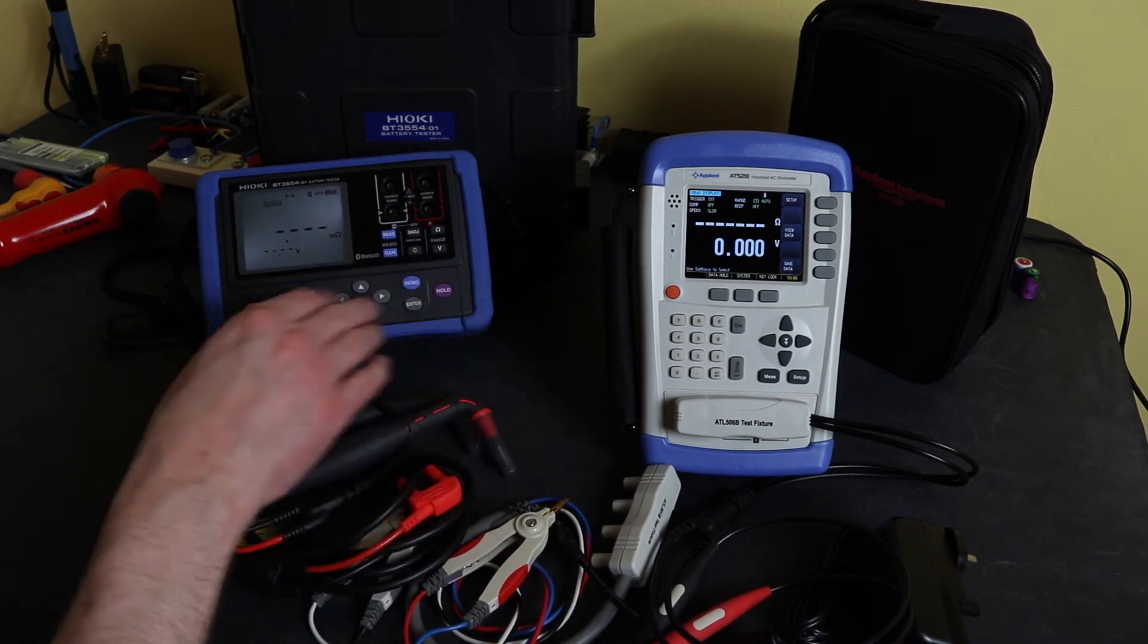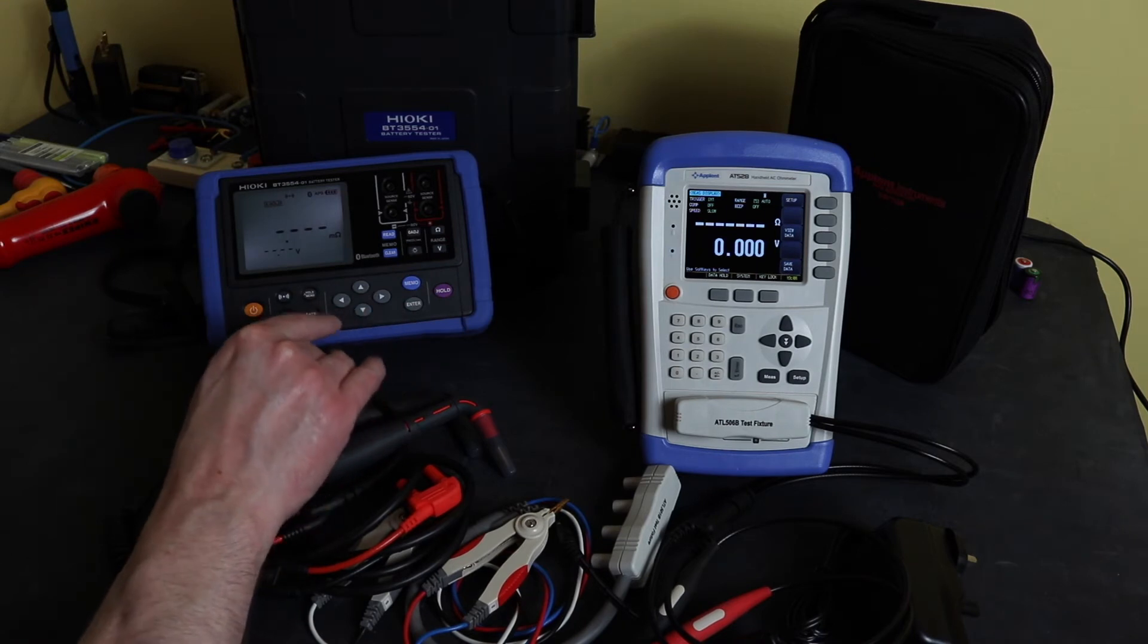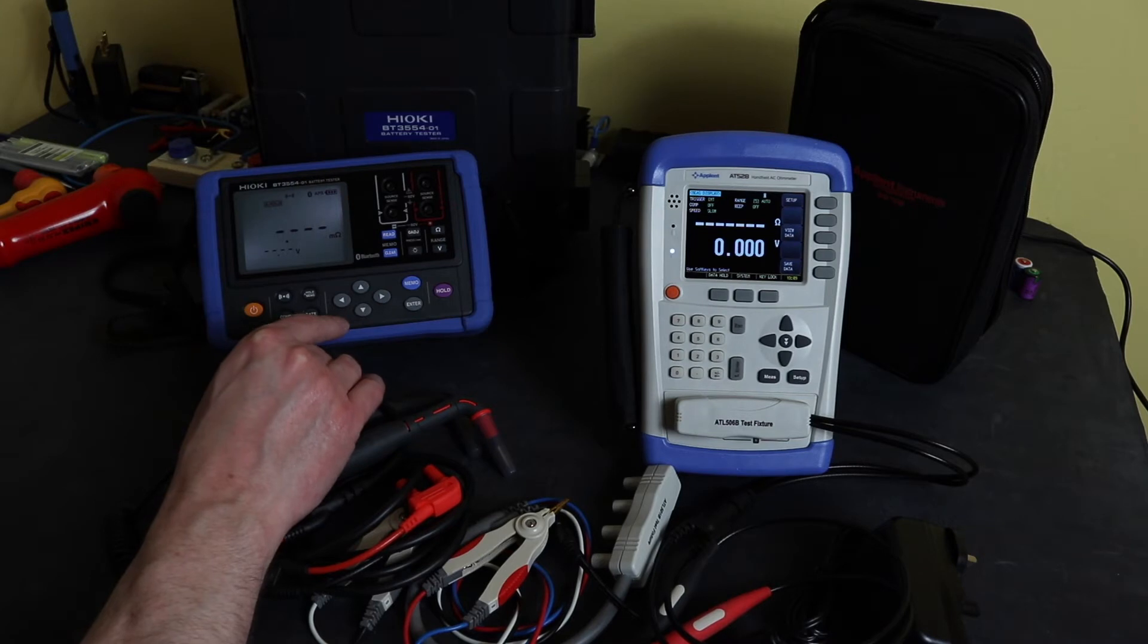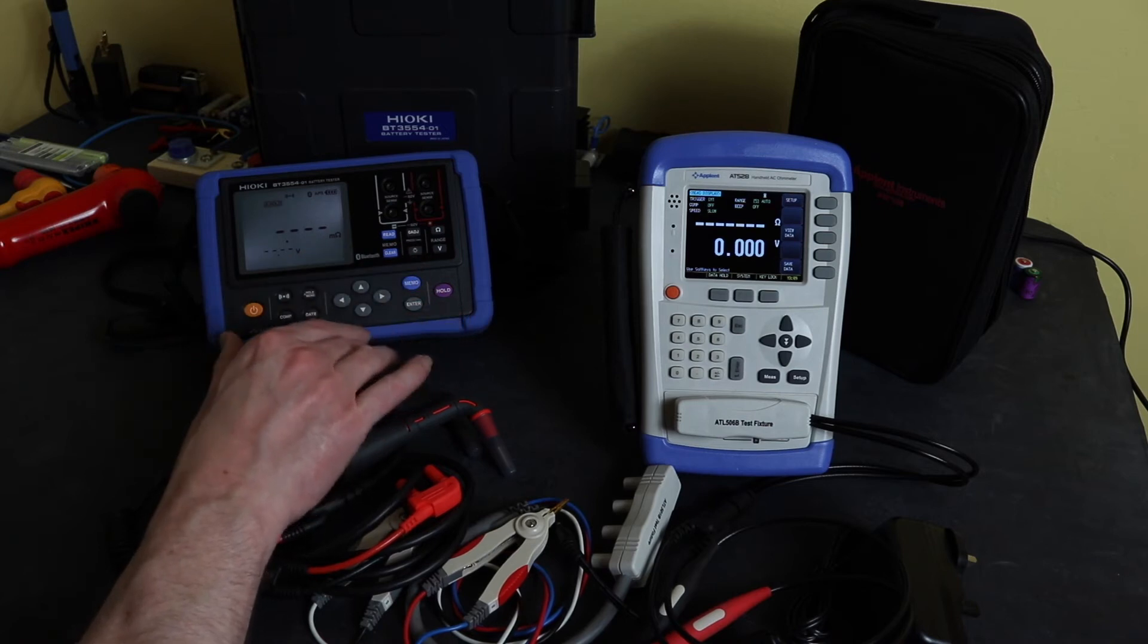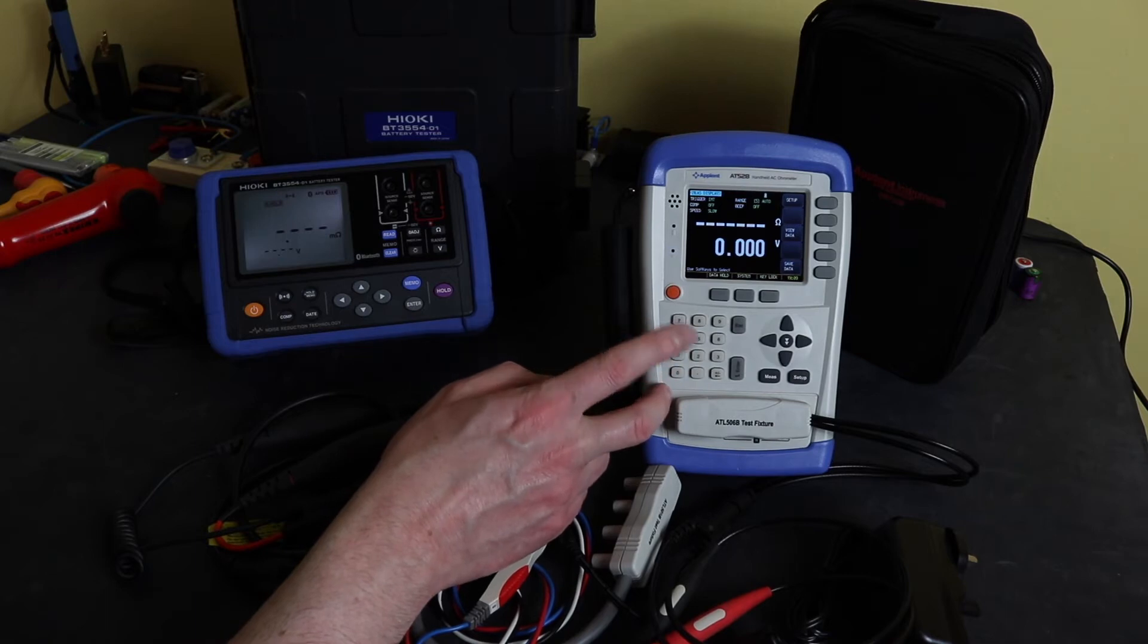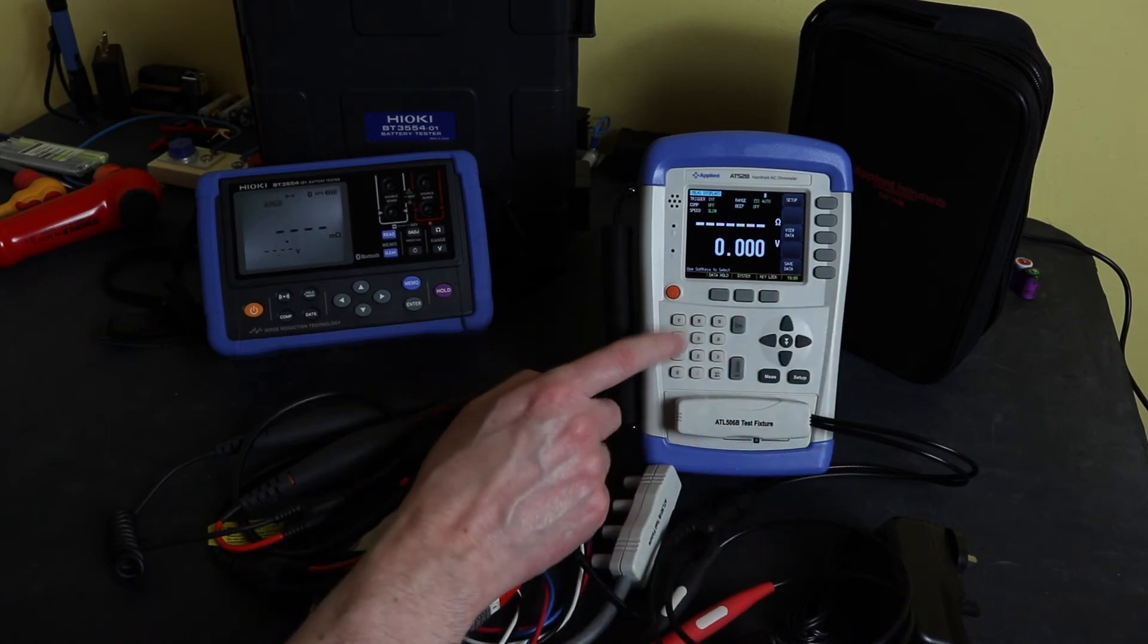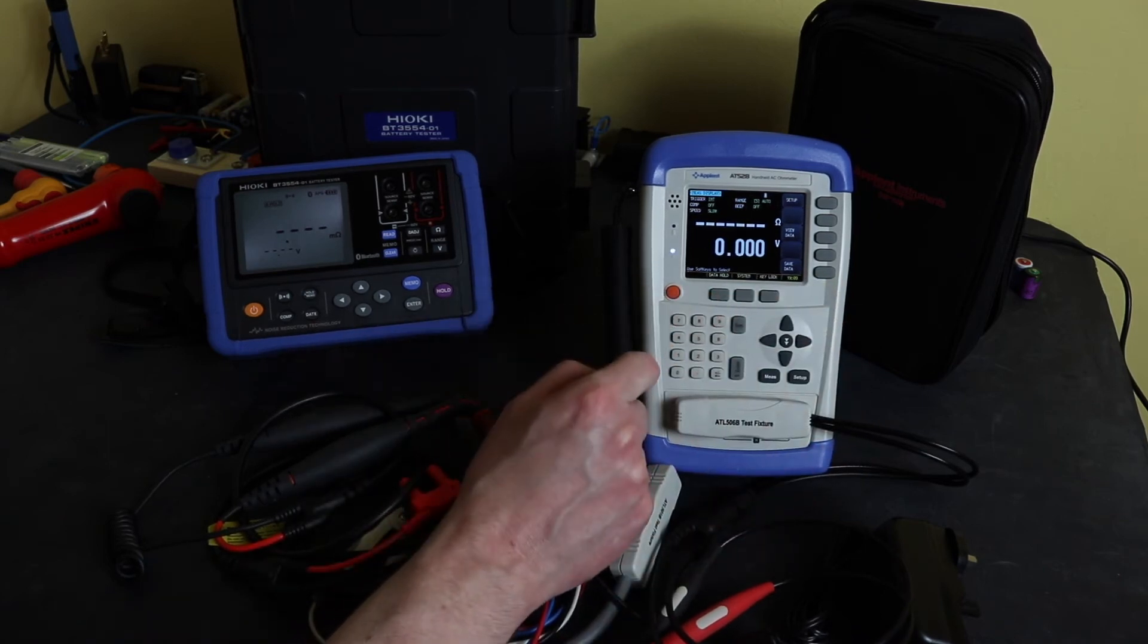This one has an auto hold and an auto save feature, so you can literally just keep taking measurement after measurement after measurement and you don't need to do anything - it will save it for you. This unit, once it takes a measurement, you have to save the data manually with the press of the button here. It also has hold but again it's manual with the press of this button here.